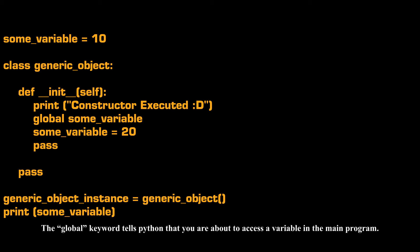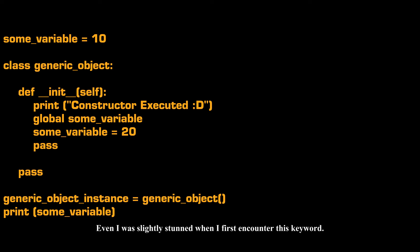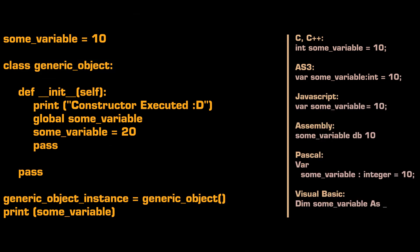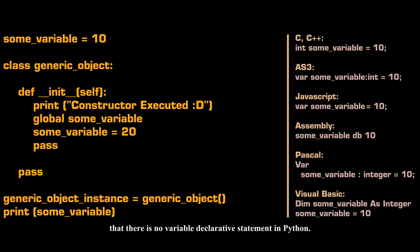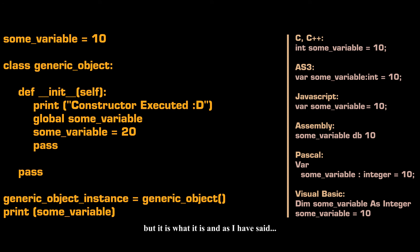The global keyword tells Python that you are about to access a variable in the main program. It should be noted that many professionals get by using Python without ever using this keyword. There is nothing wrong with it — it simply looks incoherent in a language design sense. Notice that in Python, you do not have to declare a variable, so one can safely say there is no variable declarative statement in Python. The keyword global just looks odd in a sea of Python code, but it is what it is, and some people get by never using it.